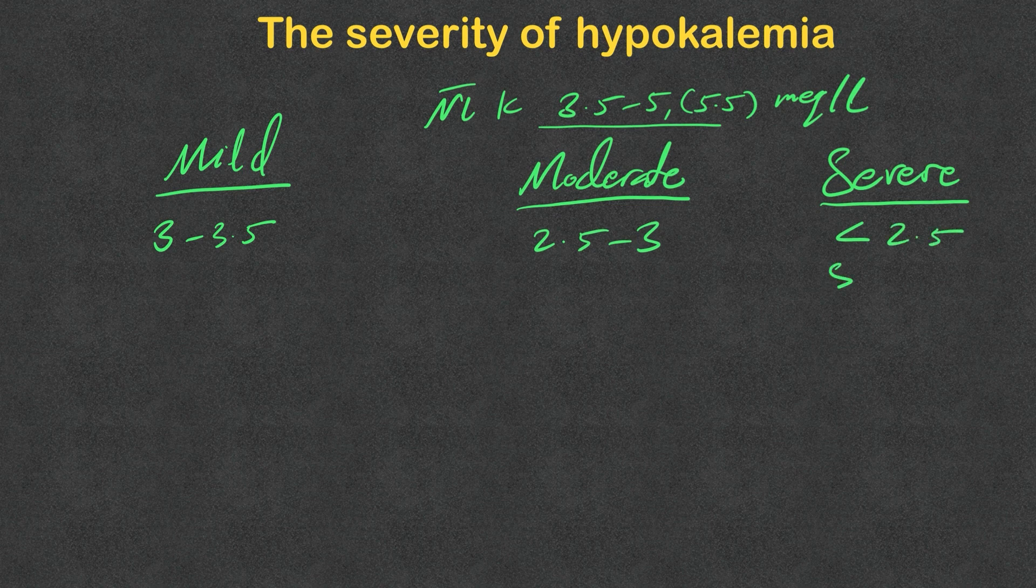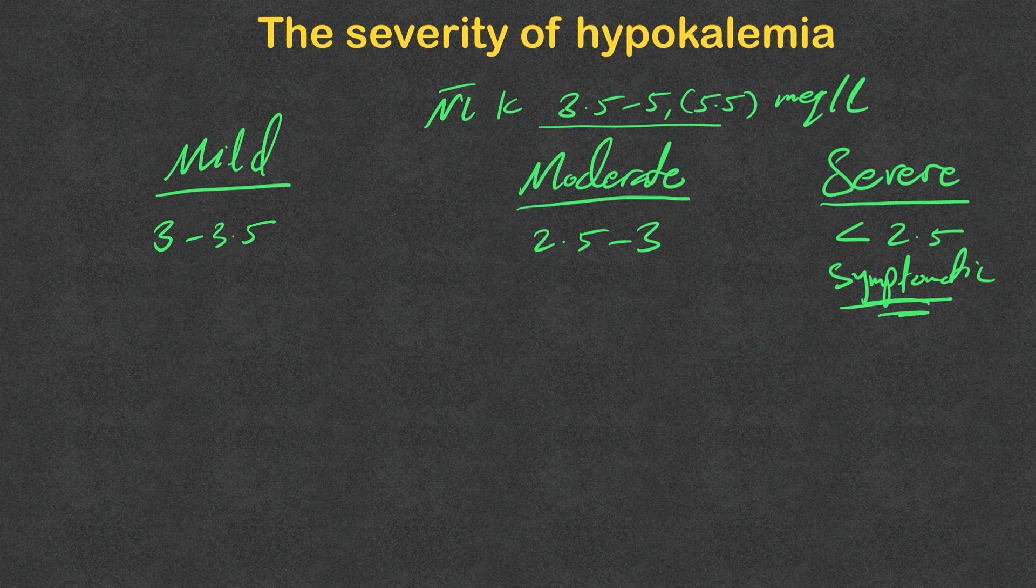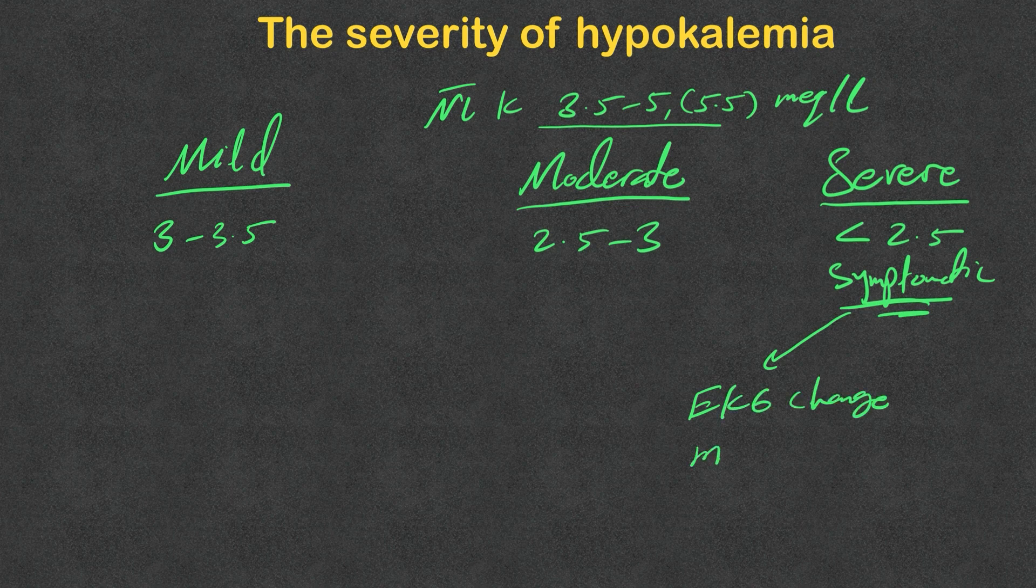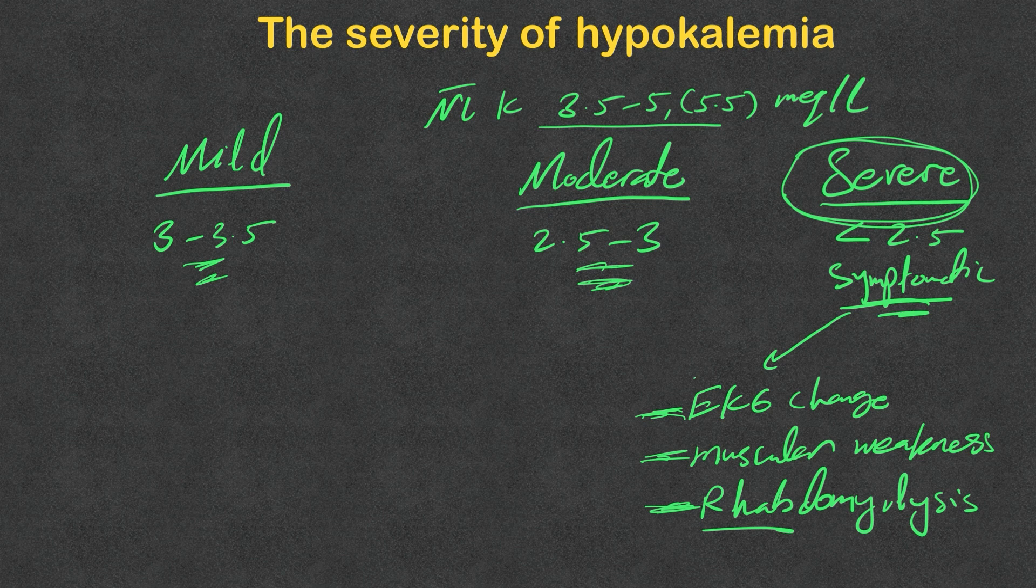Also, the presence of any symptoms, symptomatic hypokalemia regardless of the level of potassium, is considered severe hypokalemia. What kind of symptoms? Any EKG changes or arrhythmias, muscular weakness and rhabdomyolysis. Rarely these symptoms will be seen at this level, sometimes or occasionally at this level, but most of these symptoms happen when the potassium is less than 2.5.